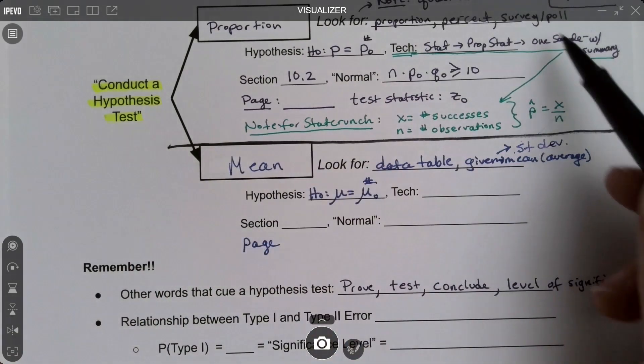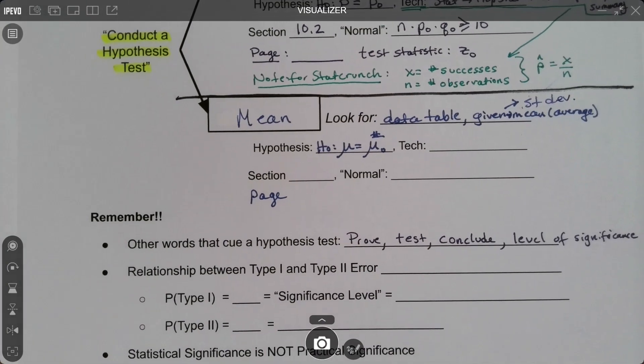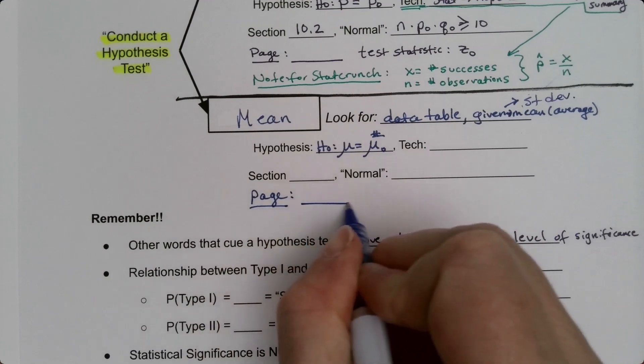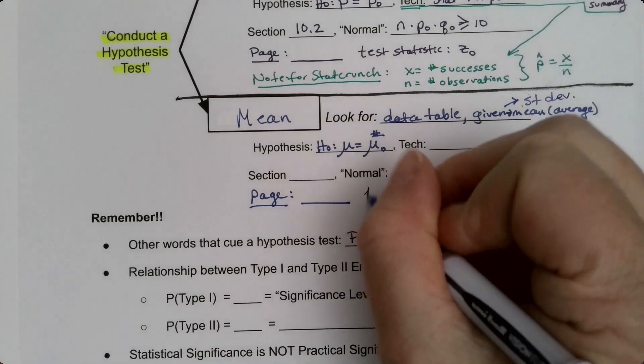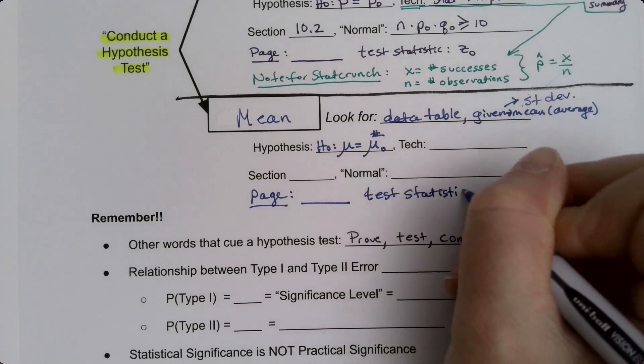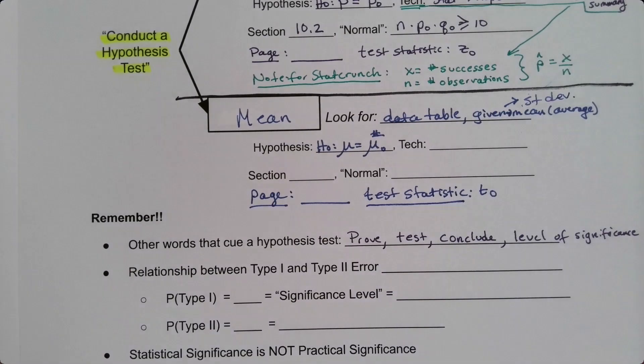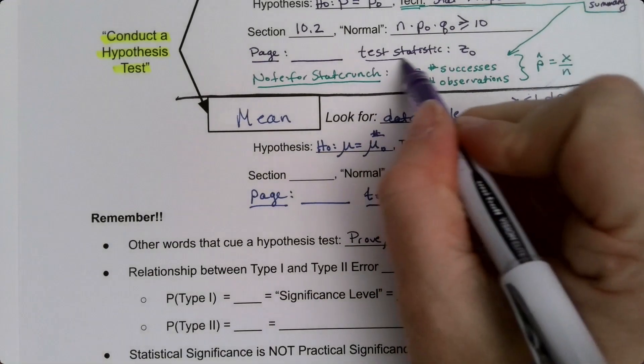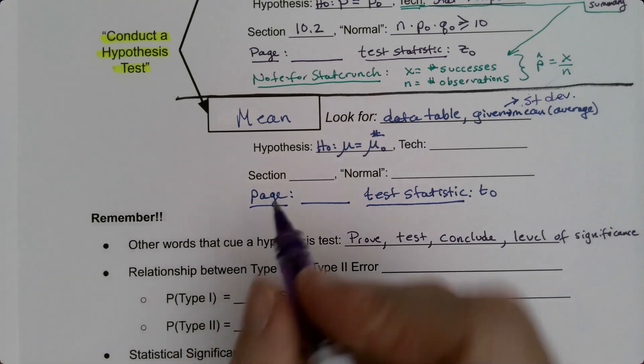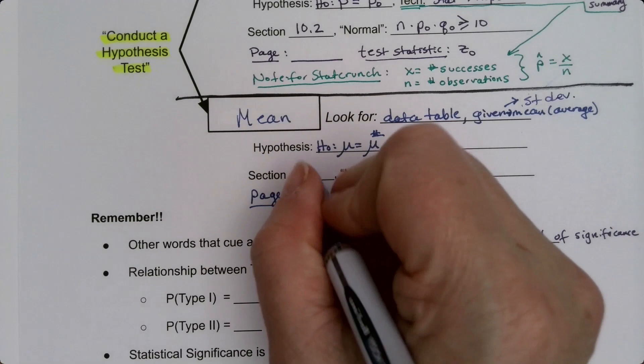So everything above this is proportions, everything below this is means. Okay, so our page number—put your page number from your yellow packet for the semester you're watching it. Your test statistic is t₀. And then our section number is 10.3. We just saw that—it said it on the yellow packet, that it was 10.3.